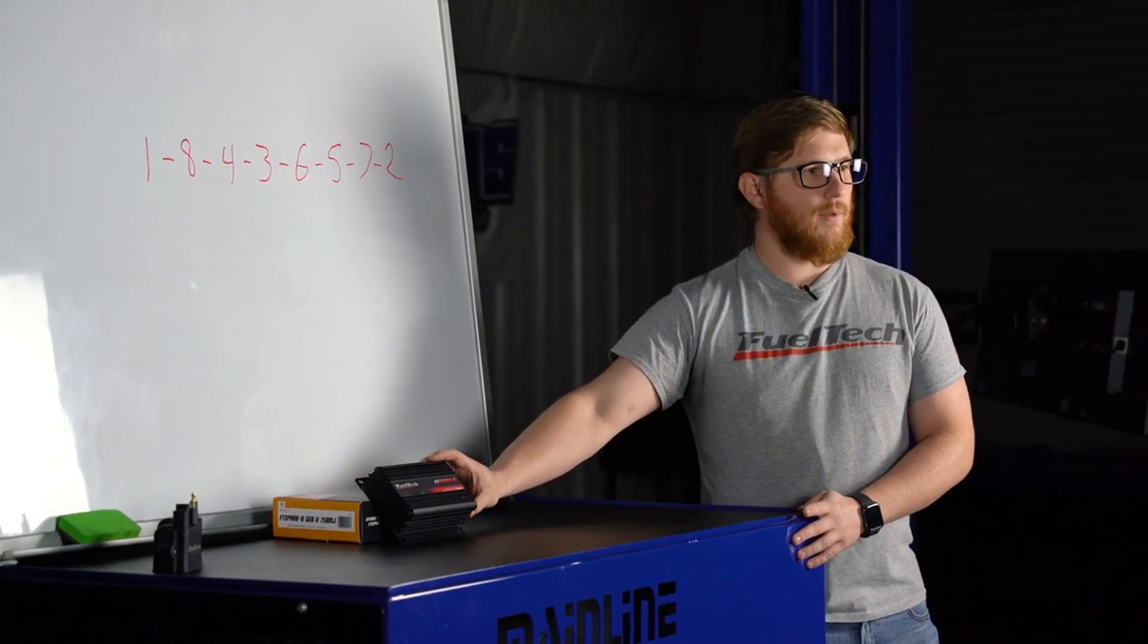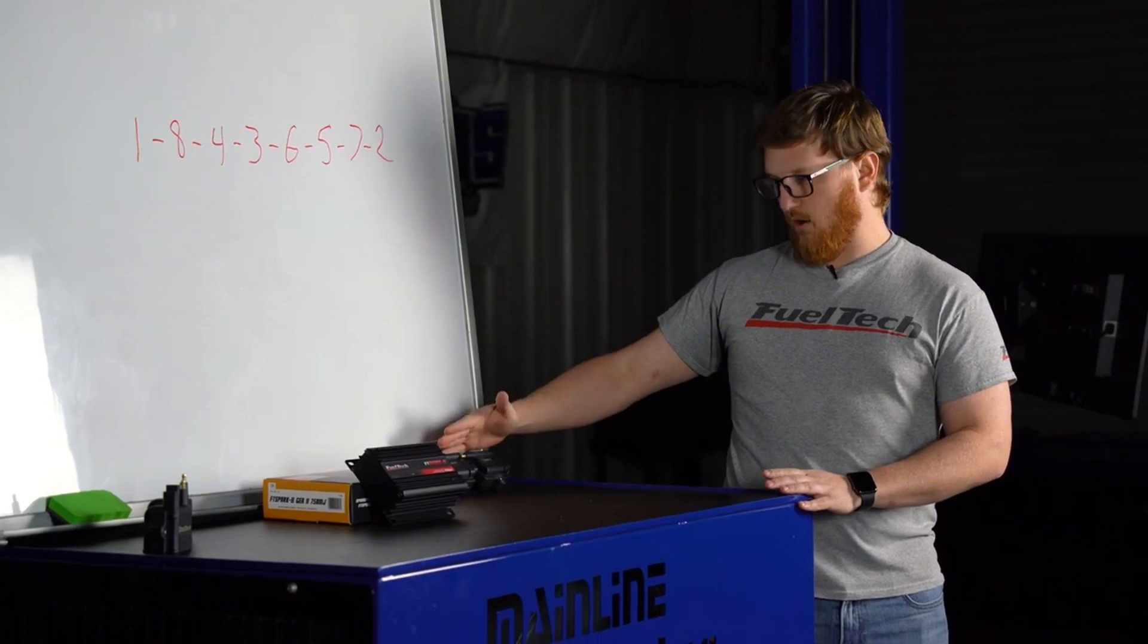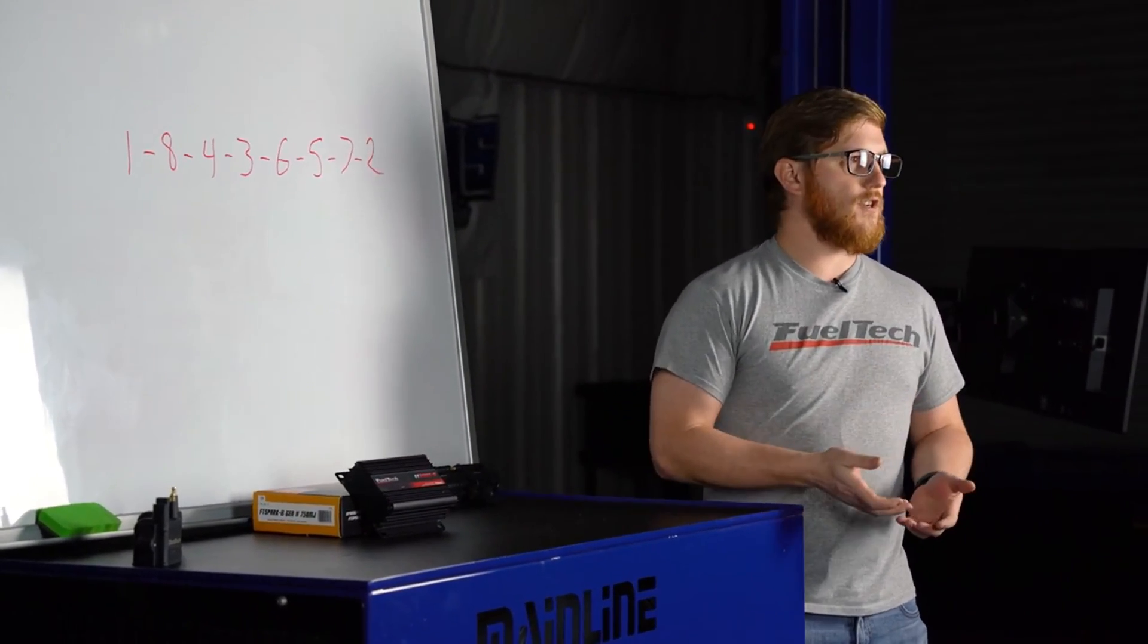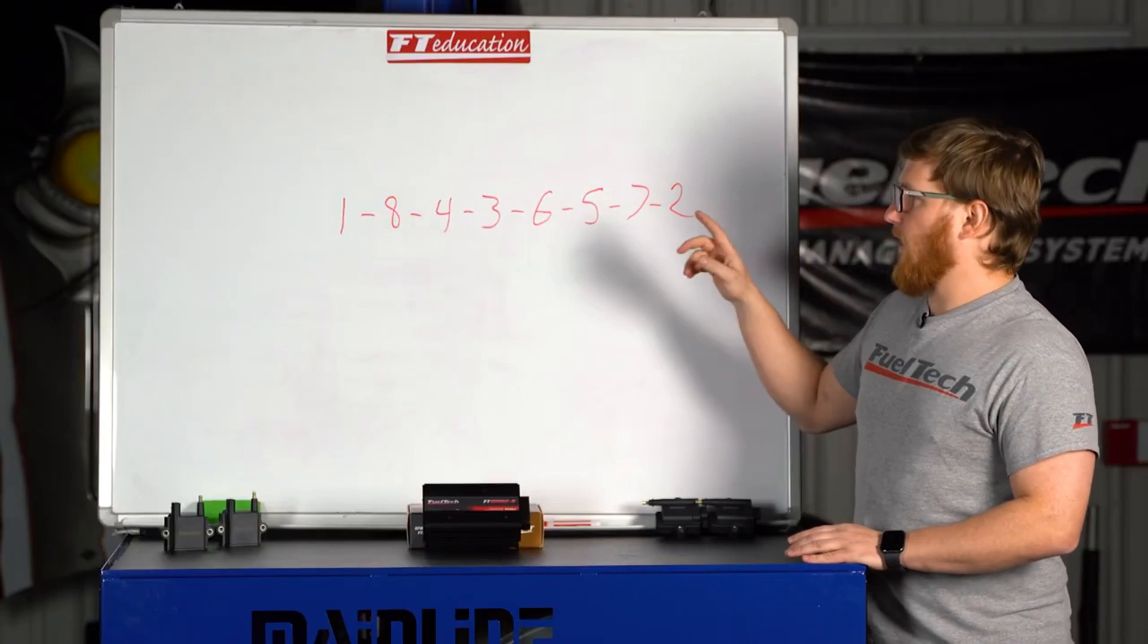This one the FT spark gate is typically done in sequential ignition same thing with our smart coils. Now sequential ignition is if you look here at this board we have like a standard Chevy firing order.